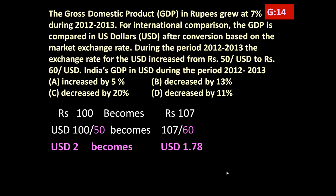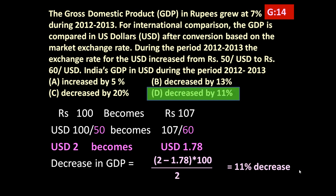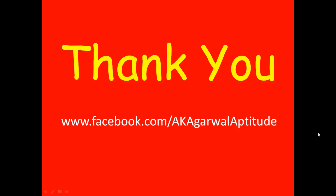Certainly the GDP is decreasing in dollar terms. The percentage change in GDP is given by (2 minus 1.78) into 100 divided by 2, which equals 11% decrease. So in terms of US dollars, India's GDP decreased by 11%. Friends, thank you very much for watching this video. You can also follow me on Facebook. Thank you.